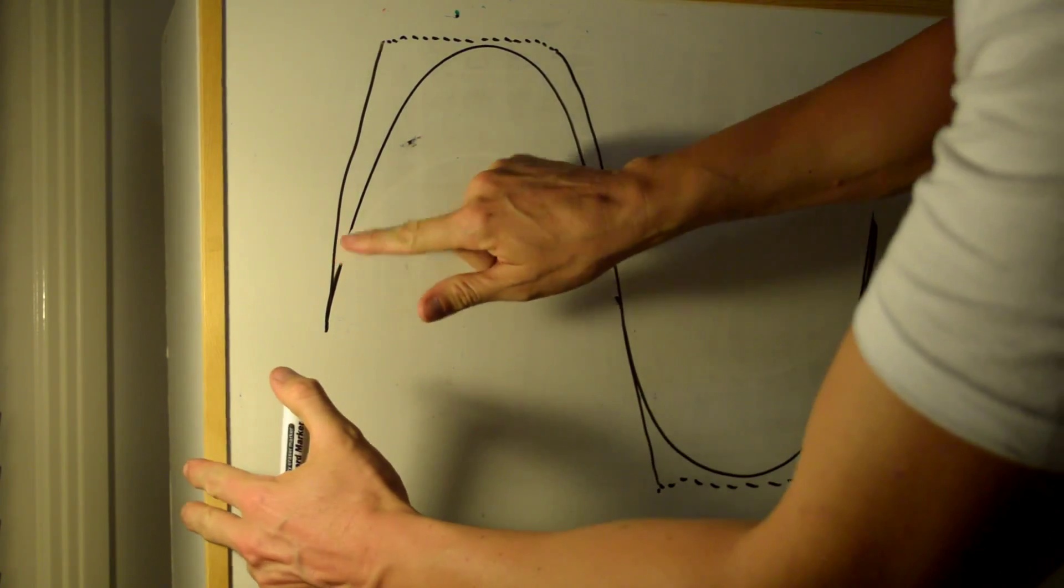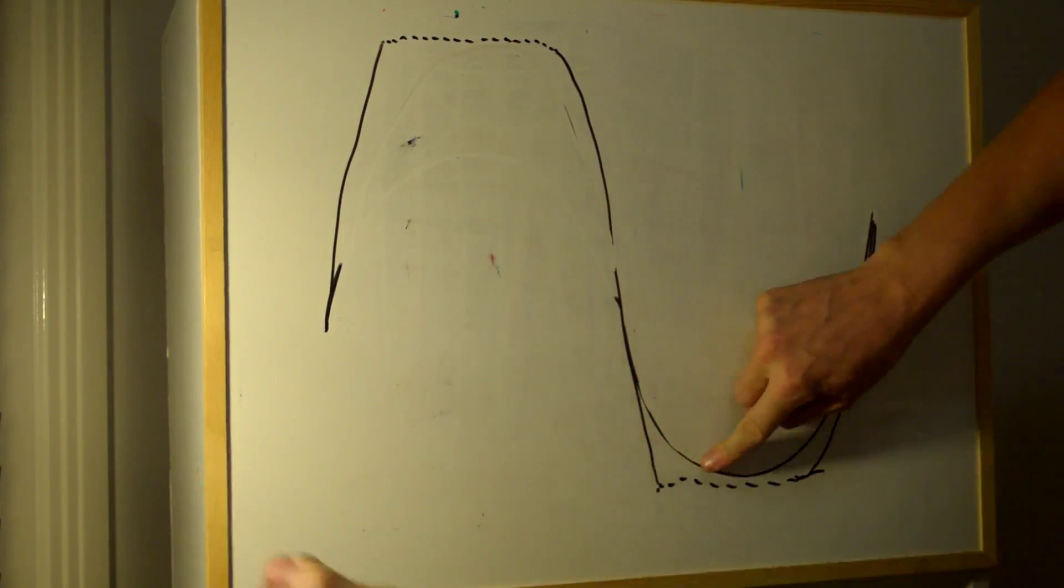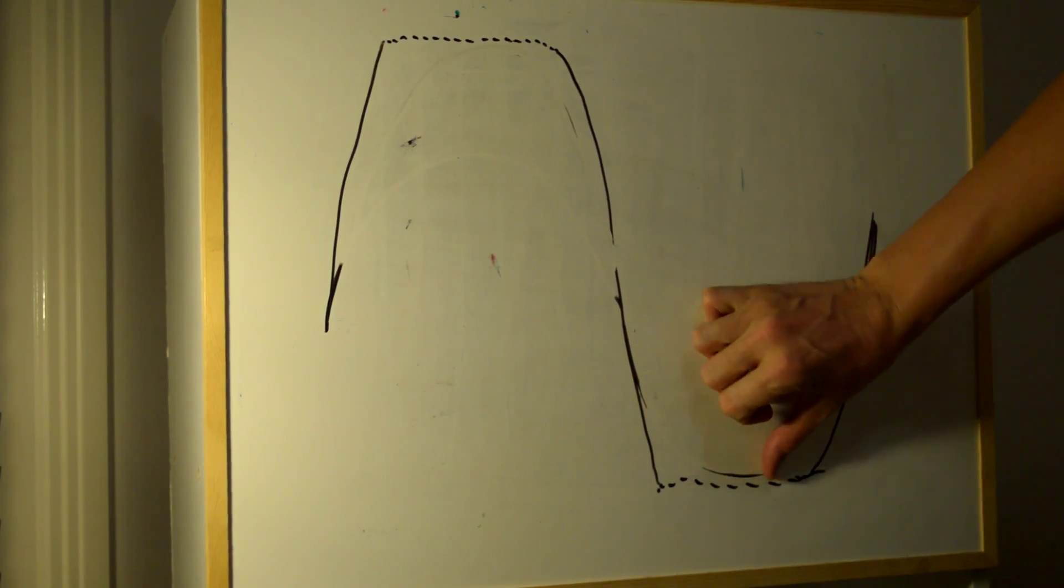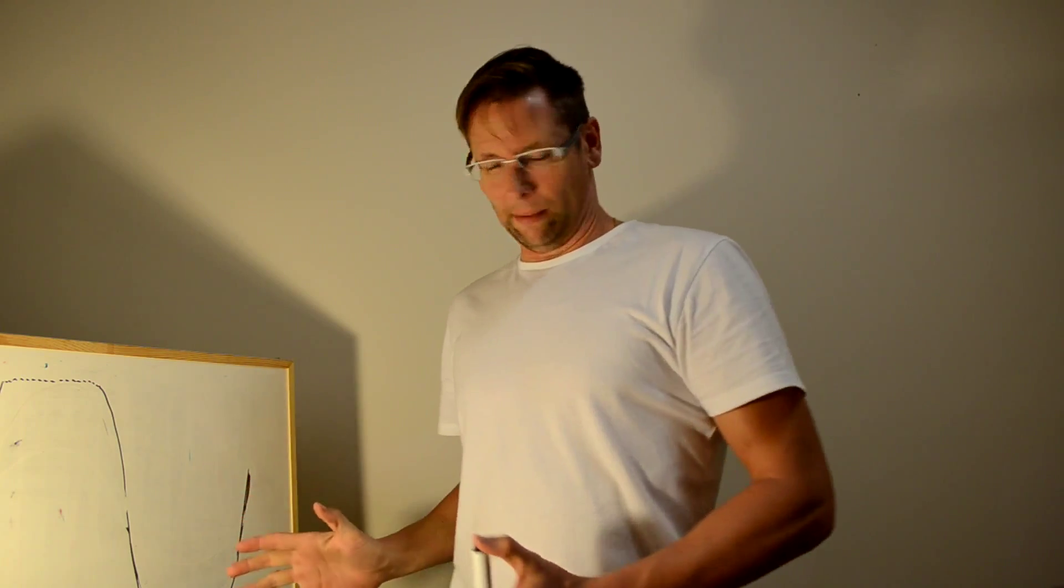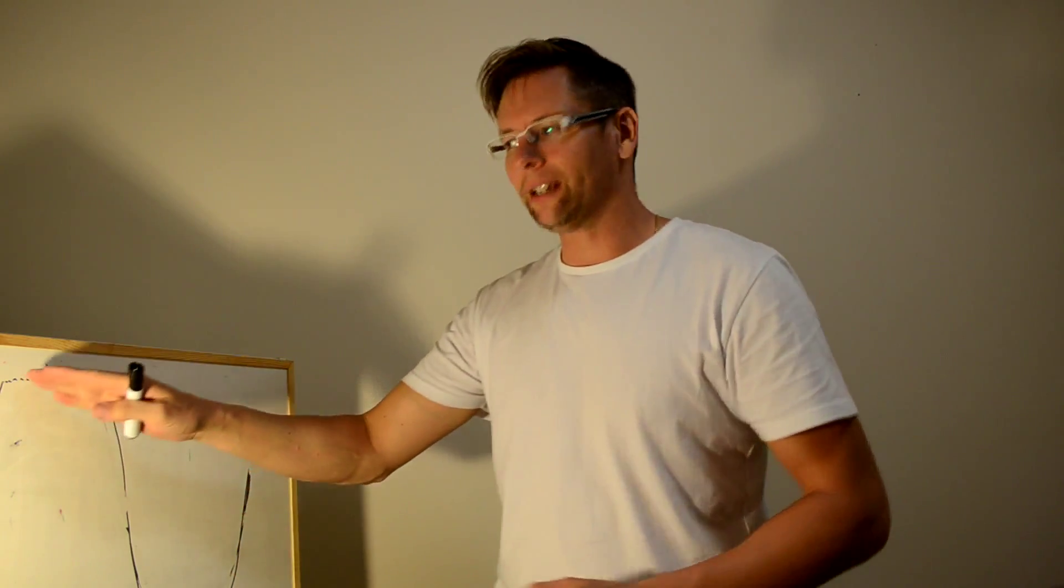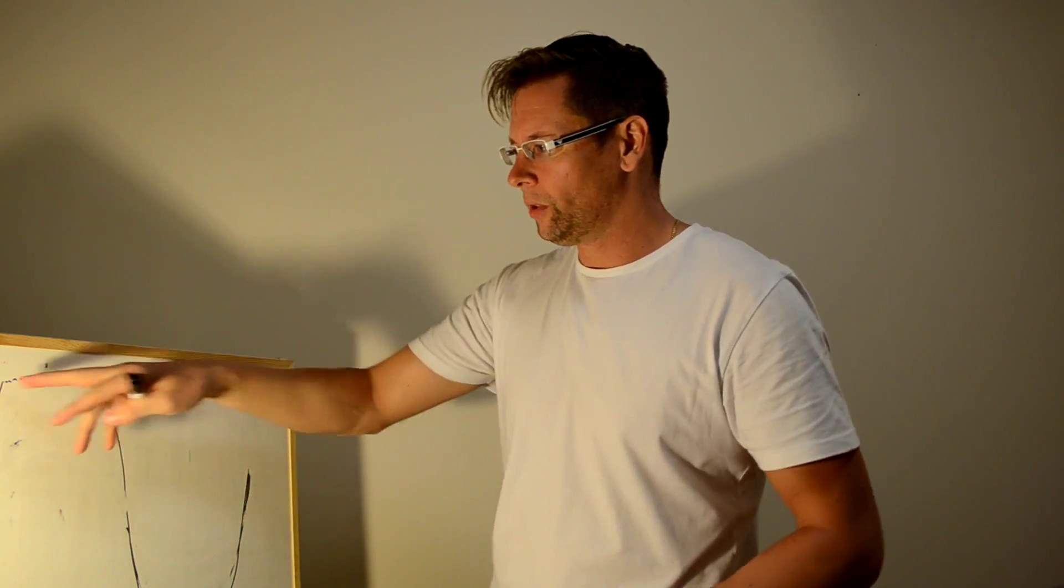If we have a signal like that, that's been overdriven, it's turned up beyond what the system can really do, we have a signal that's not clean anymore. As you can see, it's starting to look more like a square wave. What this is called is clipping.